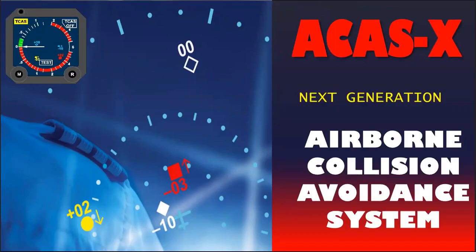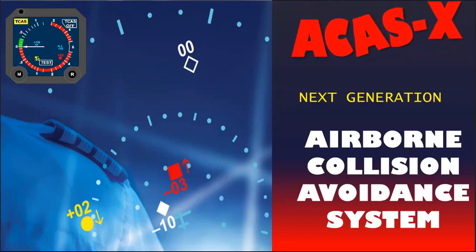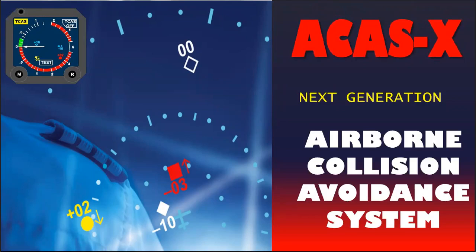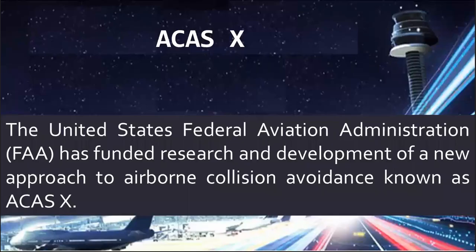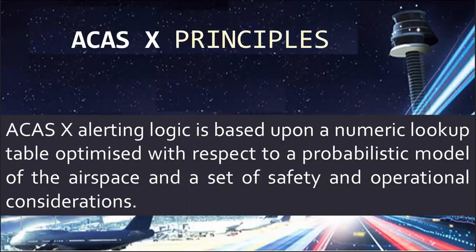The airborne collision avoidance system is the concept realized by ICAO which helps to prevent mid-air collisions. In the future, TCAS II equipment will be replaced by ACAS-XA equipment. This video will explain more about the new development of ACAS-X. The United States Federal Aviation Administration has funded research and development of a new approach to airborne collision avoidance known as ACAS-X. ACAS-X alerting logic is based upon a numeric lookup table which helps to calculate threat based on a probabilistic model of the airspace.